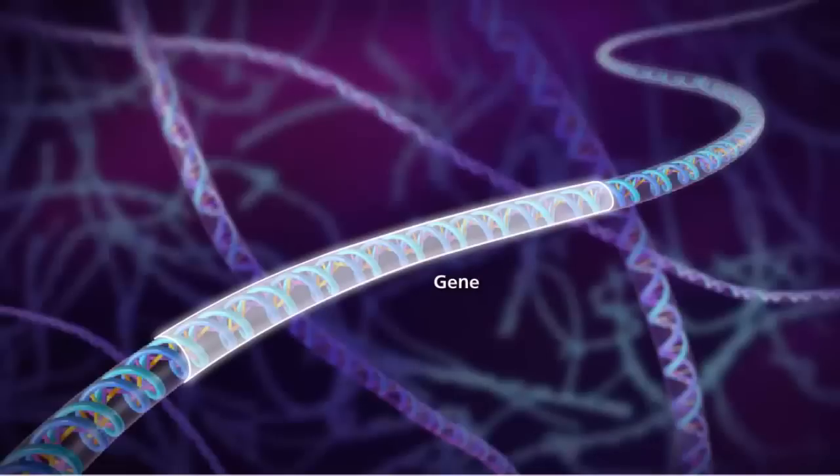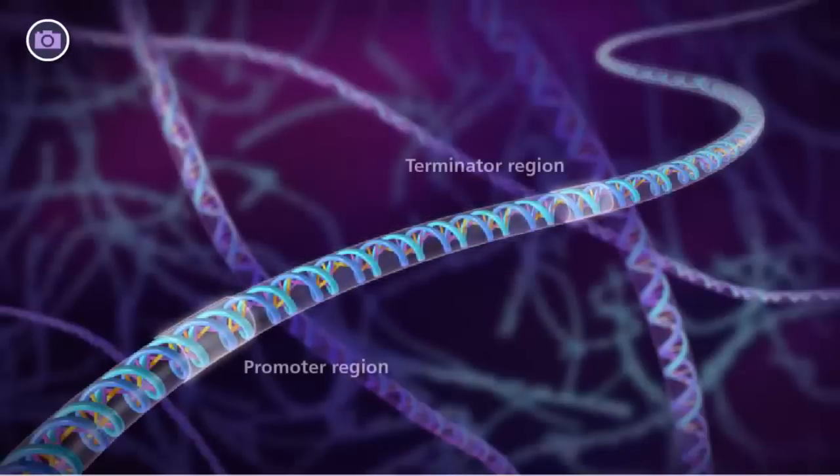This region begins with a promoter and ends in a terminator. Genes also contain regulatory sequences that can be found near the promoter or at a more distant location.